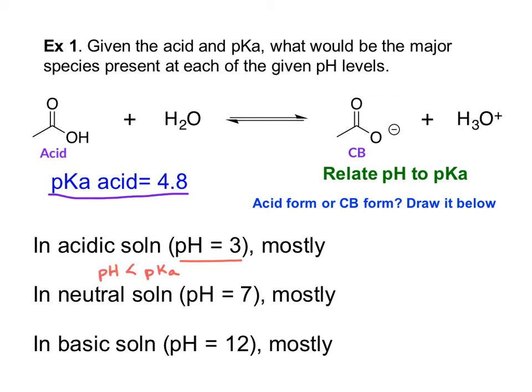That's right, pH 3 would be the pH less than the pKa. So which form should we have? That's right, we'll have the acid form, so we'll just draw the structure of the acid form. For the next question it says, in a neutral solution, around pH 7. This is going to be mostly which form? So at pH 7, is that below or above the pKa? It's greater than, right, so then because the pH is greater than, which form should we have? Right, we're going to have the conjugate base form, so we would draw that over here.